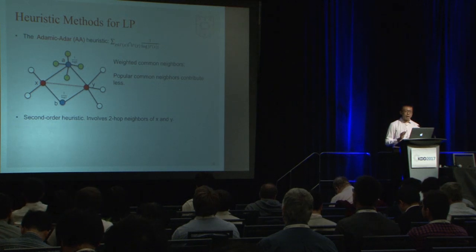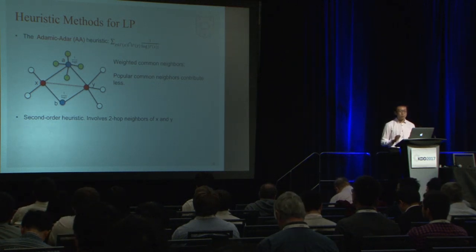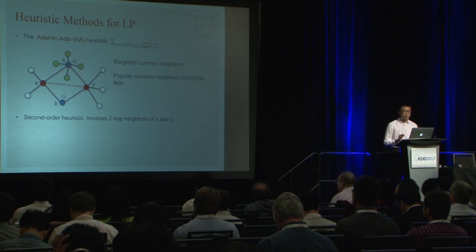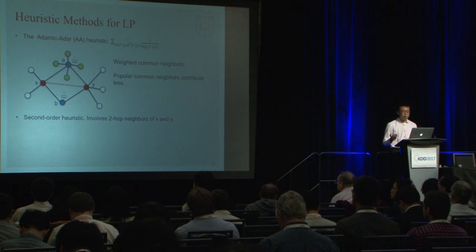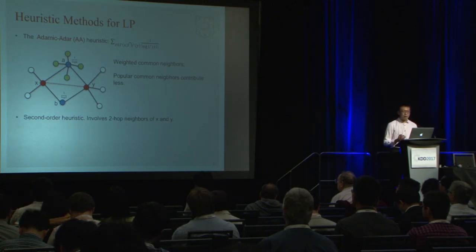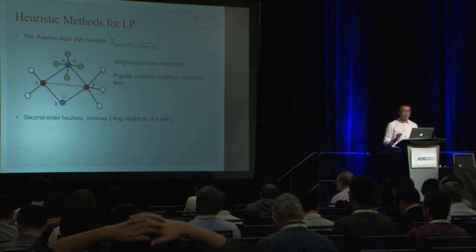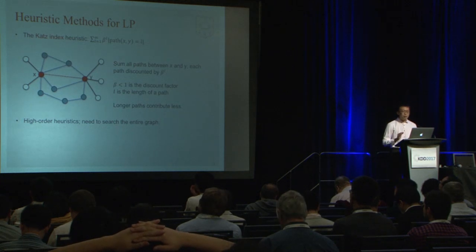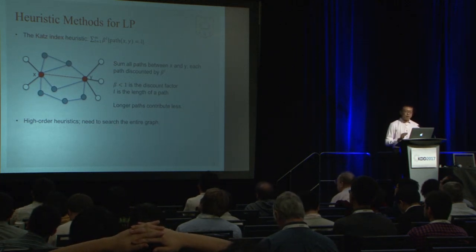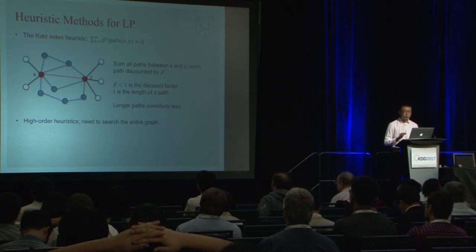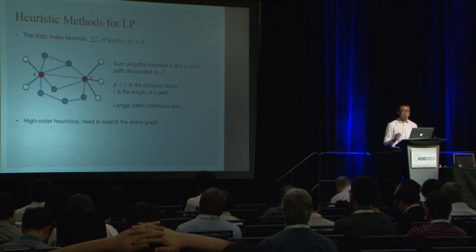Now let's see a second-order heuristic: the Adamic-Adar heuristic. It is a weighted common neighbors where a high-degree common neighbor such as node a is weighted less than a low-degree common neighbor such as node b. It assumes that x and y both connecting to a high-degree node a is not surprising, but both connecting to a low-degree node b is informative. This is a second-order heuristic since it involves up to two-hop neighbors. The Katz index is a high-order heuristic that sums all paths between x and y, discounting longer paths more than shorter ones, requiring a search of the entire graph.